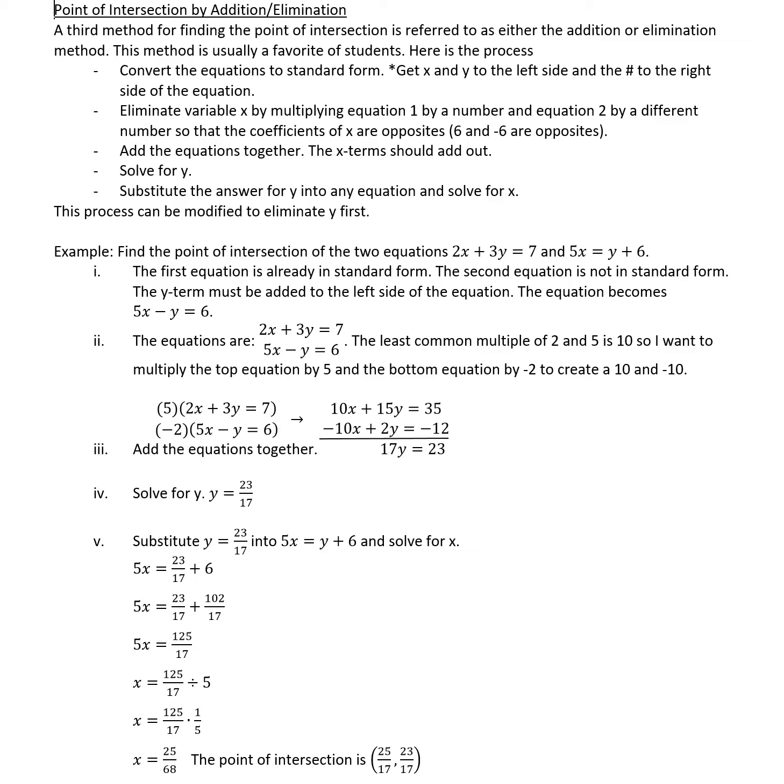Finding a point of intersection by addition and elimination. So far we've covered two videos: the first was how to find a point of intersection with a graphing technique, the second with the substitution method, and today is the third method, finding a point of intersection with the addition method. This is also sometimes called the elimination method, so if you look up additional YouTube videos or resources make sure you search under both options. Usually this method is students' favorite method, and here is the process.